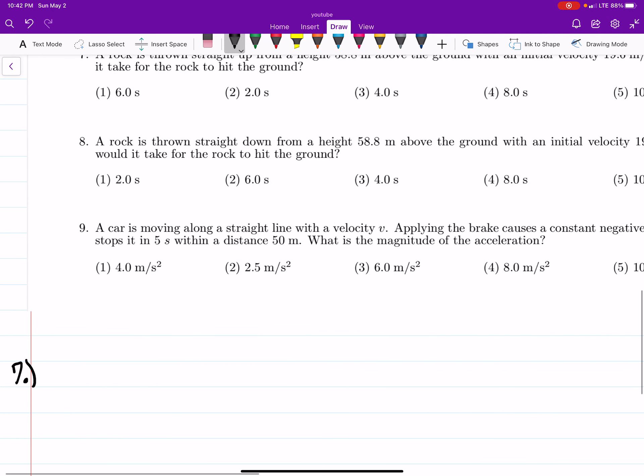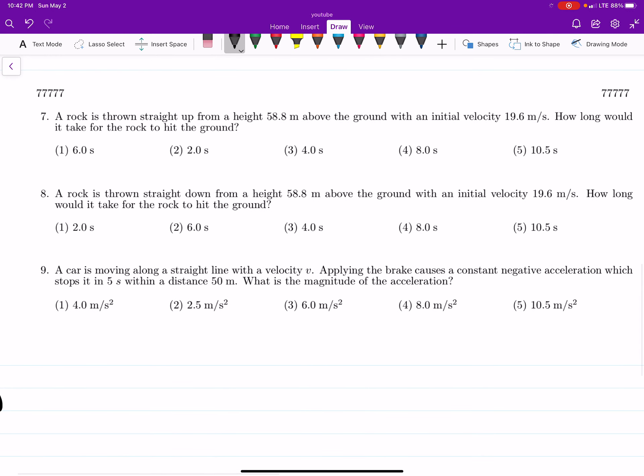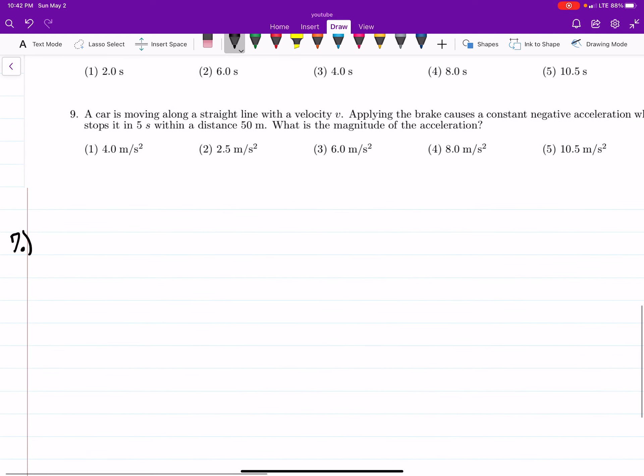So we'll start with question seven, which says: a rock is thrown from a height 58.8 meters above the ground with an initial velocity 19.6 meters per second. How long would it take for the rock to hit the ground? I'm just going to draw it out a little bit here. I like to draw pictures.